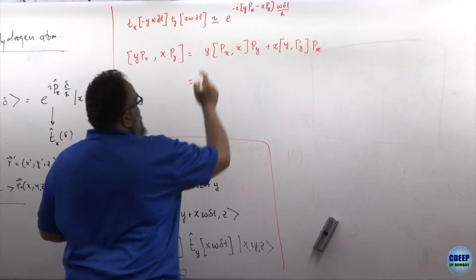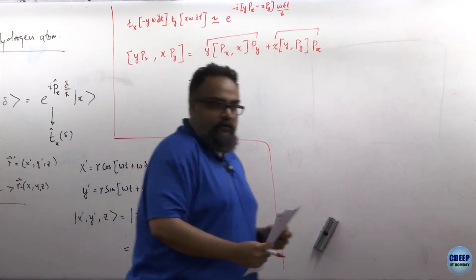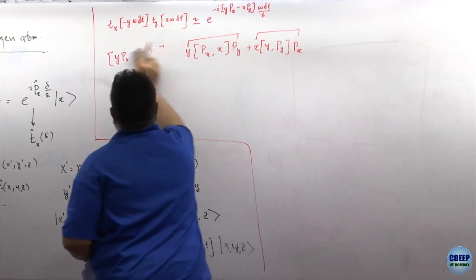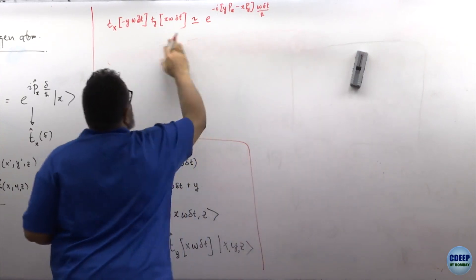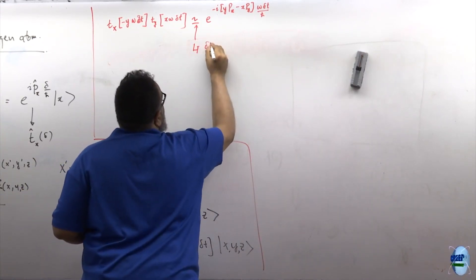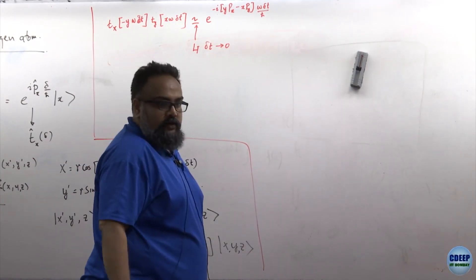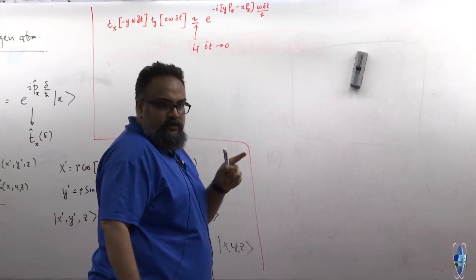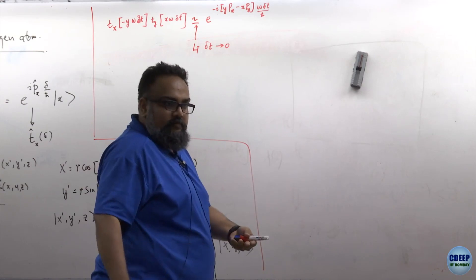The point is that there is a y·P_y and an x·P_x there, and those things are non-commuting. So this commutator is non-zero, and because of this, this statement is only true in the limit that delta-t goes to zero. In that limit, only the first-order terms are important and they are identically the same.